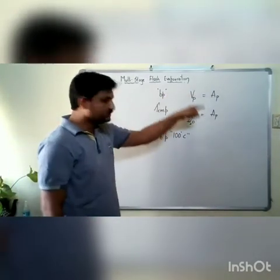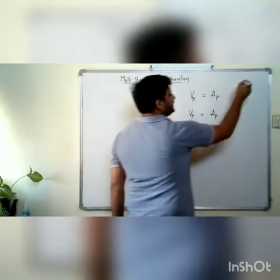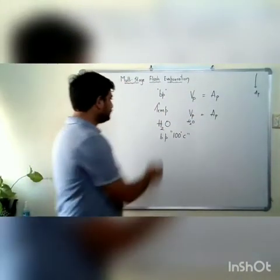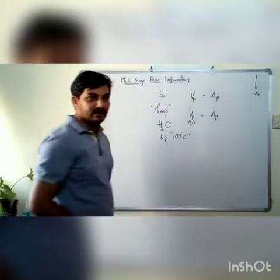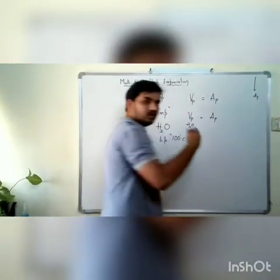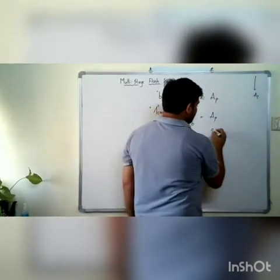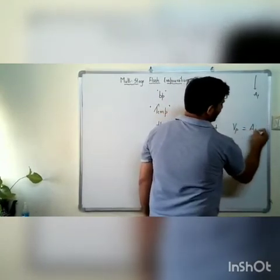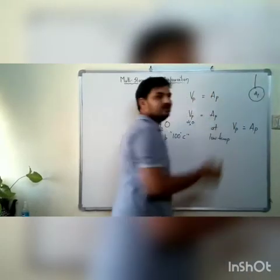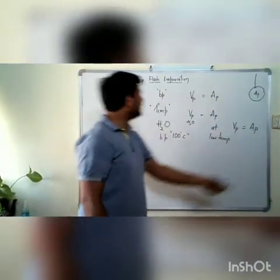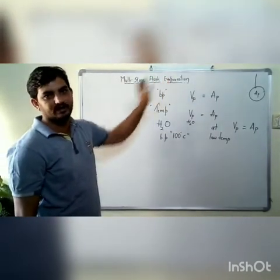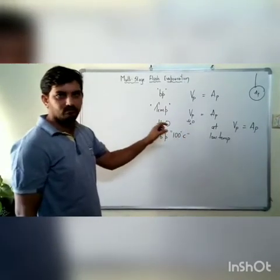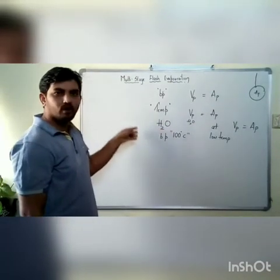Now using this fundamental idea — what if I decrease the atmospheric pressure? If I decrease the atmospheric pressure, the temperature required by any liquid to convert its vapor pressure to equal the atmospheric pressure will be lower. That means at a lower temperature, vapor pressure will equal atmospheric pressure, provided I have decreased the atmospheric pressure. This is the basic idea used in the multi-stage flash evaporation technique.